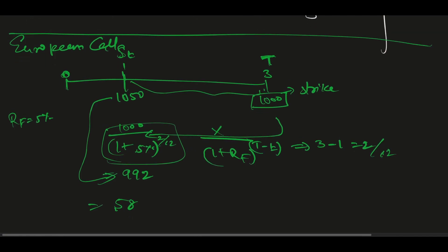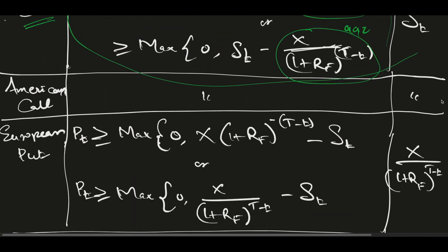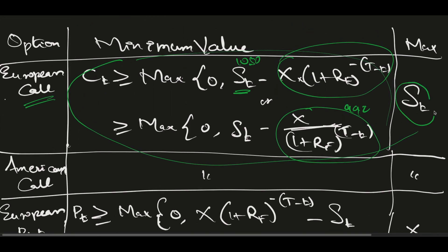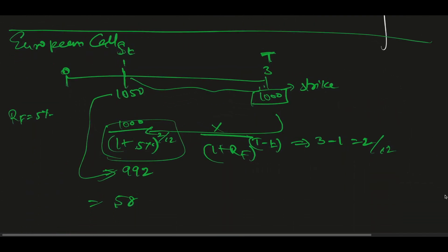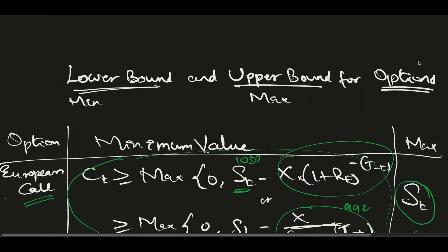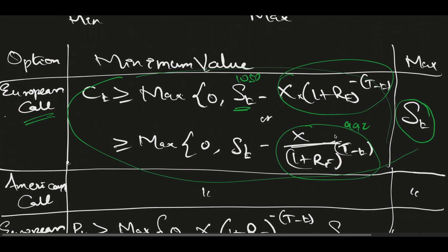The maximum value of the call option is the spot price of 1050. So the call option value ranges from a minimum of 58 to a maximum of 1050. That's what this rule indicates.